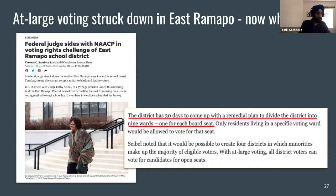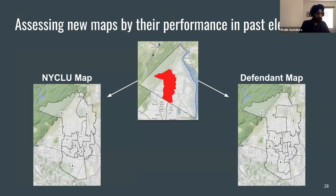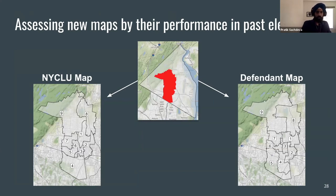Both the plaintiff NYCLU and the defendant school district had to propose new voting maps for the district. East Ramapo is shown in the middle in red, with two proposed maps: the NYCLU map on the left and the defendant school district map on the right. Each map looks similar but has differences in their divisions. As discussed earlier, even a ward system can result in vote dilution if the lines are drawn in the right way — so how do we look at these two maps and tell which, if either, provides adequate representation to minority voters?